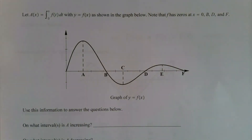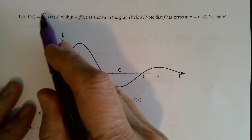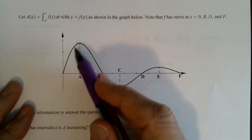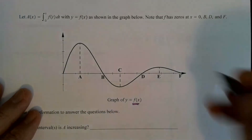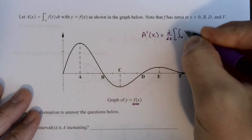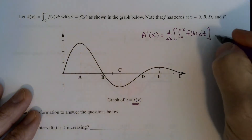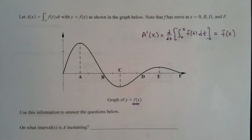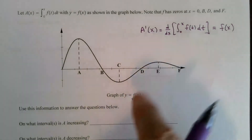Now let's tie that into this last example using the Fundamental Theorem of Calculus Part 1. I have a function A(x) defined as an accumulation function. The graph of the function f is shown here — and this is important: this is not the graph of A. I'm giving you the graph of f. But we know A prime of x equals f(x), by the Fundamental Theorem of Calculus. So this is not the graph of A; it's the graph of A prime.